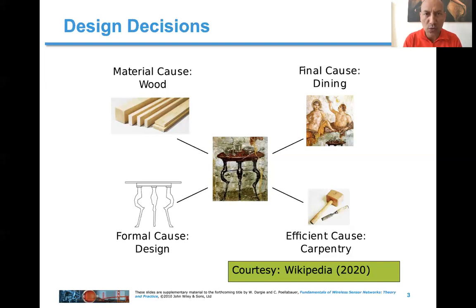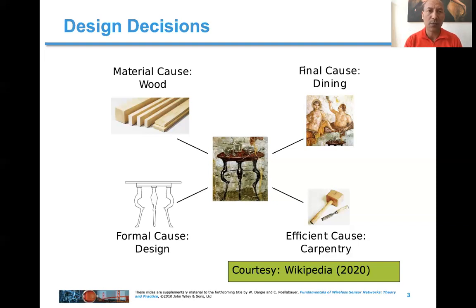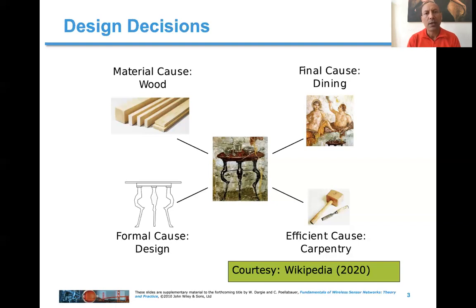For example, in terms of the cost of the sensor node, the size of the sensor node — because it has to occupy space — the performance of the sensor node: we are not only interested in what it does, but how fast it does it. Other aspects we need to take into account include the ease with which we can interact with the sensor node, the ease with which it can be reconfigured, reprogrammed, and so on. So there is a wide range of decisions to be made both in terms of its functional and non-functional aspects.